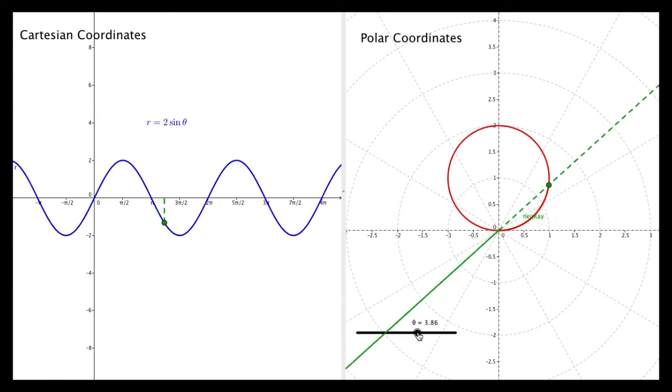And again, we trace out the circle again. This time with our negative r values. Until we hit 2 pi and we're back to where we started.